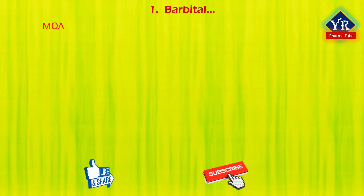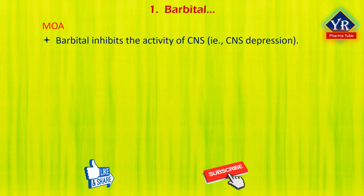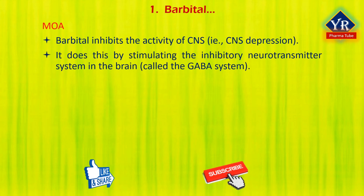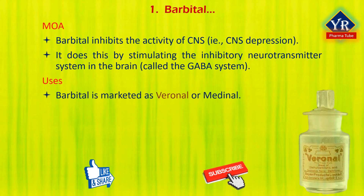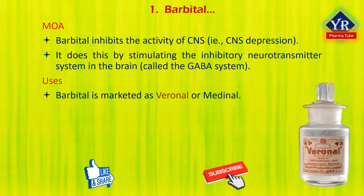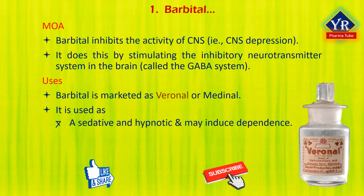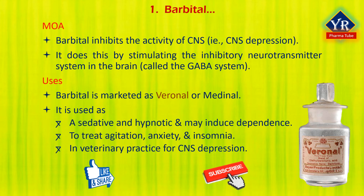The primary mechanism of action of barbitol is inhibition of the central nervous system, causing CNS depression. This is brought about by stimulating the inhibitory neurotransmitter system in the brain called the GABA system. Barbitol is marketed under the brand names Veronol for the pure acid and Medinol for the sodium salt. It was the first commercially available barbiturate, used as a sedative and hypnotic, and may induce dependence. It is used to treat agitation, anxiety, and insomnia, and also in veterinary purposes for CNS depression.